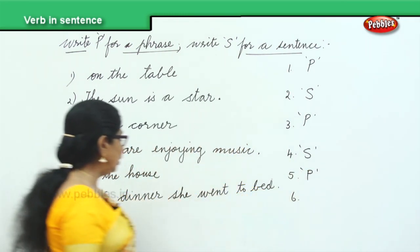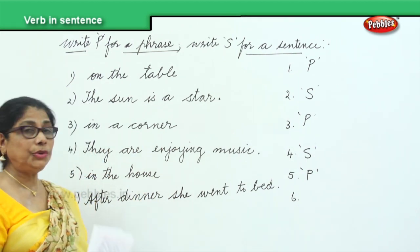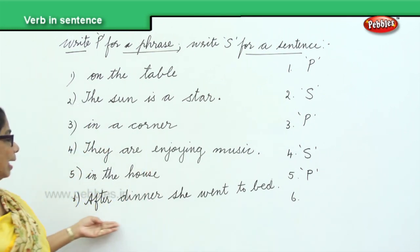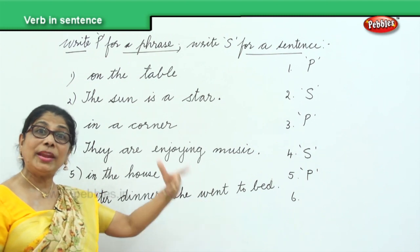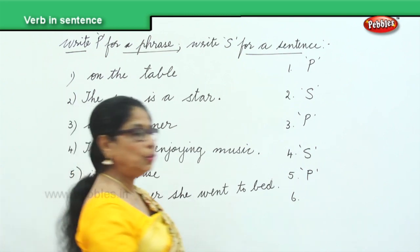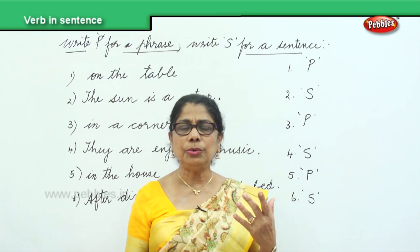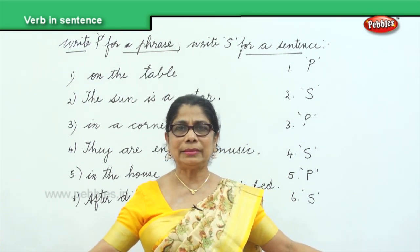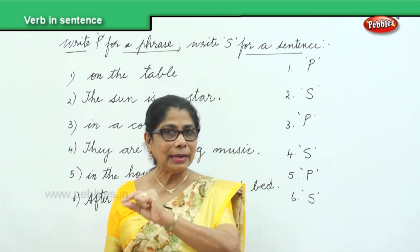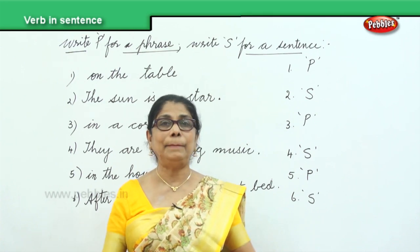And finally you have: after dinner, she went to bed. It begins with a capital letter, ends with a full stop, says something about what she did — she went to bed — there is a verb, it makes complete sense. So that is a sentence, S. So what did we learn here? We learn to segregate phrases from sentences, remembering that a sentence has a capital letter at the beginning, ends with a full stop, and makes complete sense.